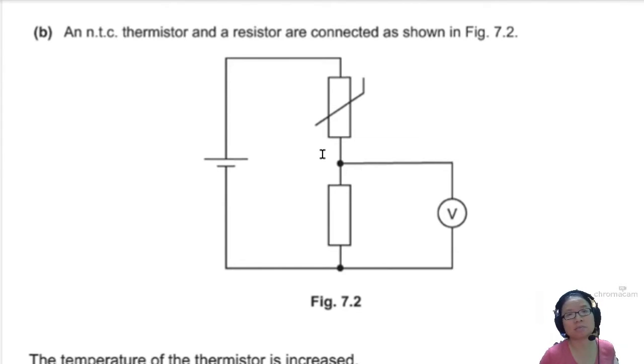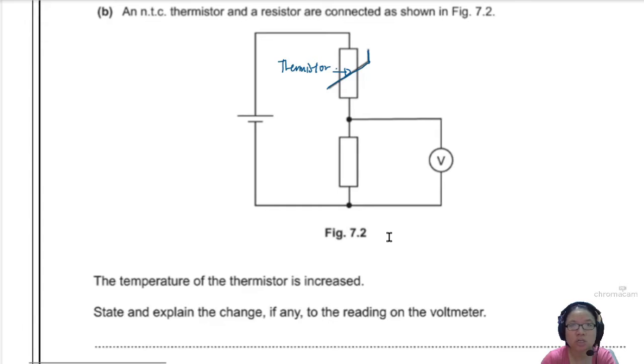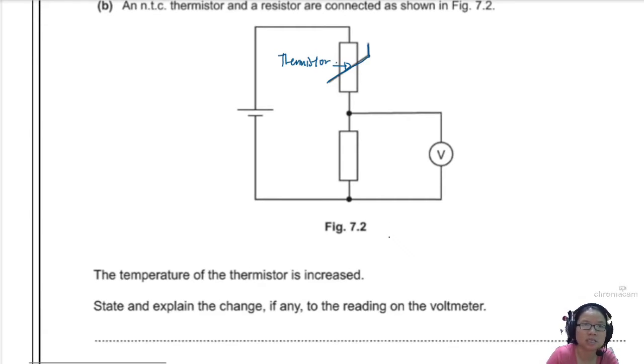So here you can see this termistor. This is the termistor. It's connected as shown in figure 7.2. We know this is a termistor because it has this symbol that looks like a spoon. And the voltmeter is connected across the other resistor. And now, what happens to the termistor? Temperature of termistor is increased.